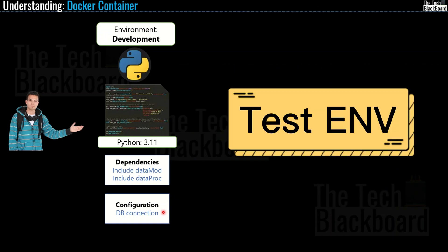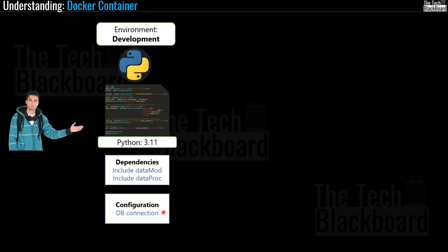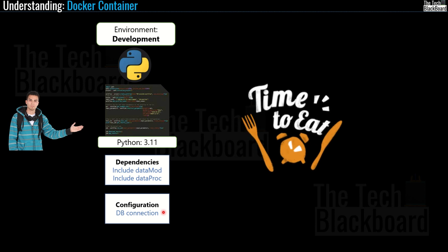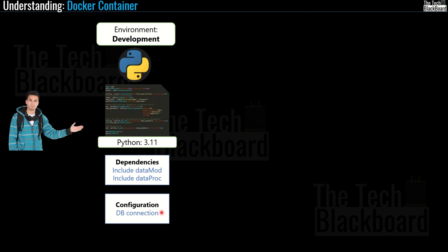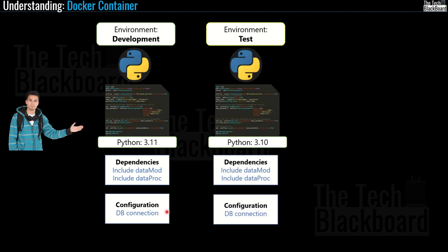The entire code along with the dependencies and configuration files are now moved to the test environment and testing starts. Just when our cool programmer was having lunch, the testing team called to report that his code breaks. When Mr. Joy checks, he finds that the test environment is running Python version 3.10. But no worries — Joy does some minor adjustments in the code and the code is working again.